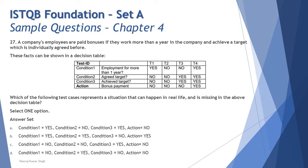Option C: condition one is no, condition two is no, condition three is yes, action is no. The employee has no one year of experience, did not agree to a target, but claims to have achieved it. The action is appropriate but the scenario is again unrealistic and not realistic enough to be captured in our table.